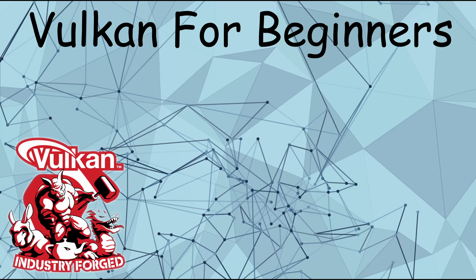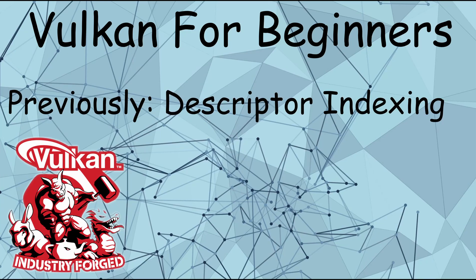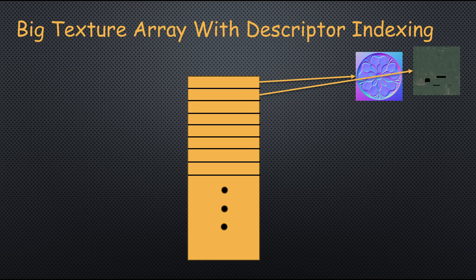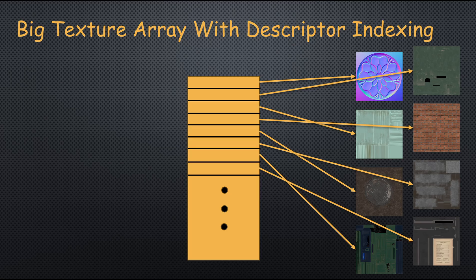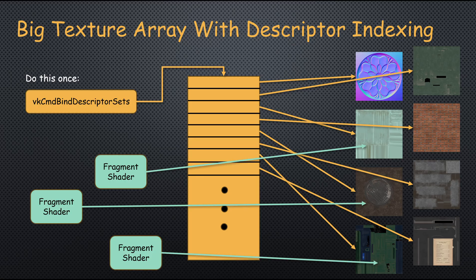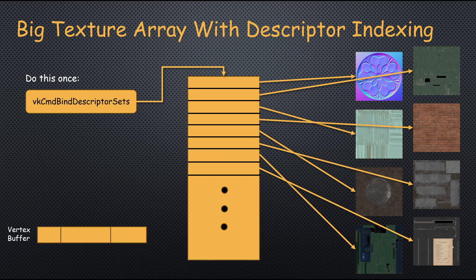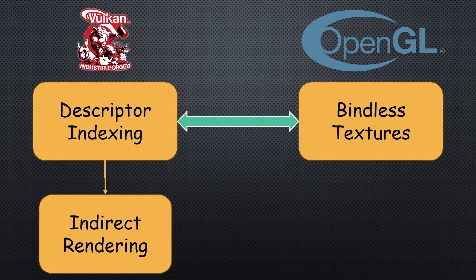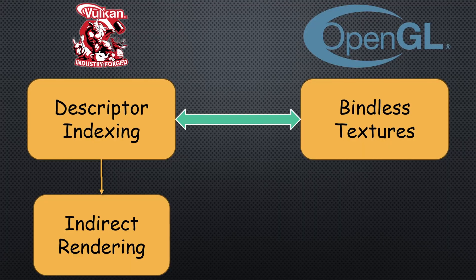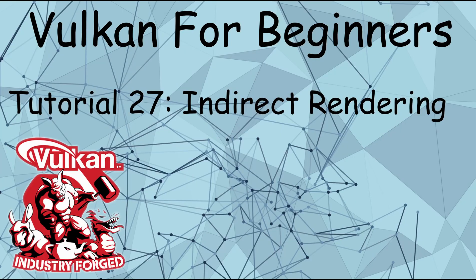Hello Vulkan developers! In the previous video we learned about descriptor indexing, which allows us to use a single descriptor set with a very large array of resources. This array is bound once and each individual vertex or fragment can dynamically access a different resource in it. For example, this allows us to use different textures for different segments or vertices without rebinding descriptor sets. Descriptor indexing is a milestone on the way to indirect rendering, which is the topic of today's video.